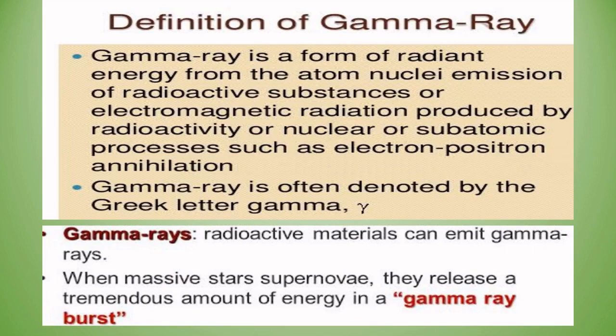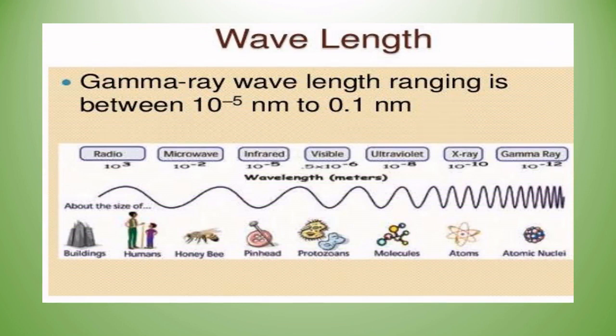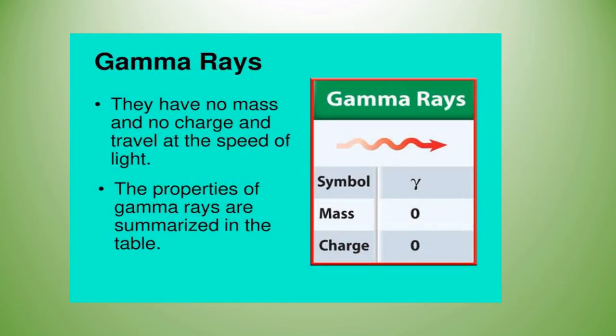Radioactive materials can emit gamma rays. When massive stars explode, they release a tremendous amount of energy in a gamma ray burst. Gamma ray wavelength ranges from 10⁻⁵ nanometers to 0.1 nanometers. Gamma rays have no mass, no charge, and travel at the speed of light.